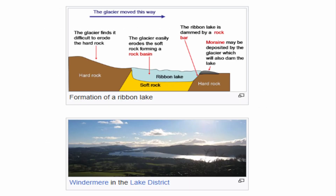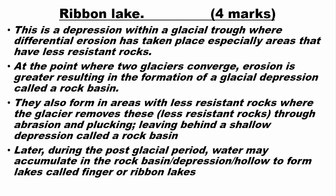A ribbon lake is a long, very deep, finger-shaped lake usually found in a glacial trough. It is a depression within a glacial trough where differential erosion has taken place, especially in areas with less resistant rocks. At the point where two glaciers converge, erosion is greater, resulting in the formation of a glacial depression called a rock basin. The glacier also removes less resistant rocks through abrasion and plucking, leaving a shallow depression. During the post-glacial period, water accumulates in the rock basin to form lakes called finger or ribbon lakes.